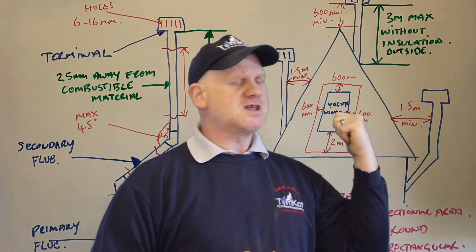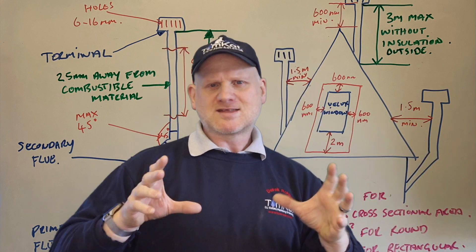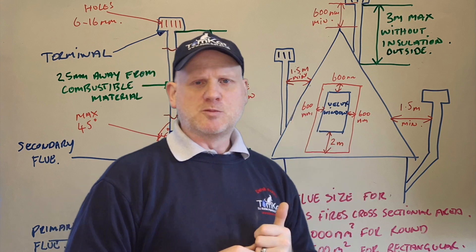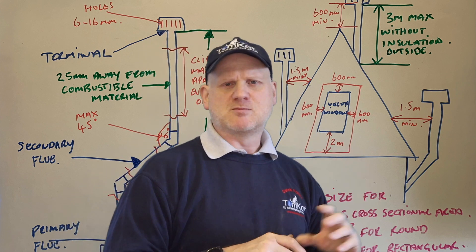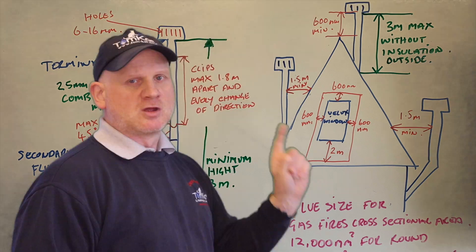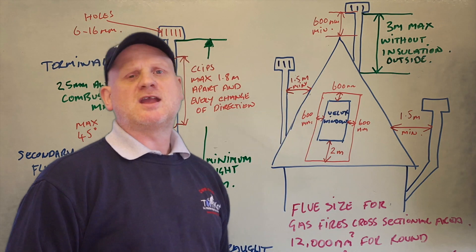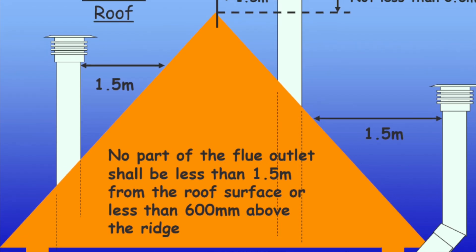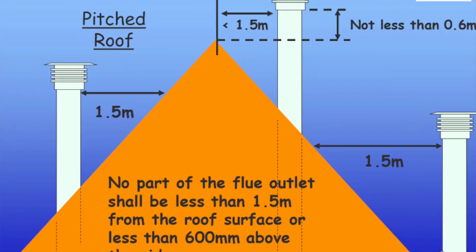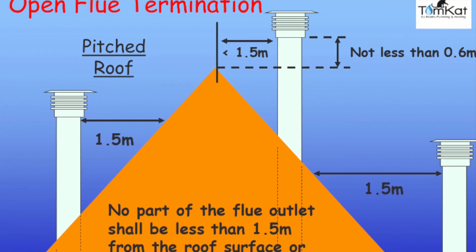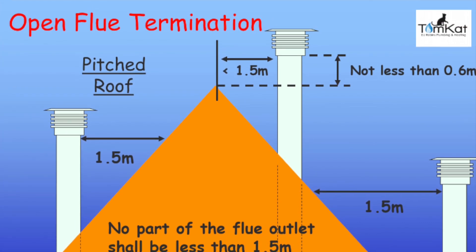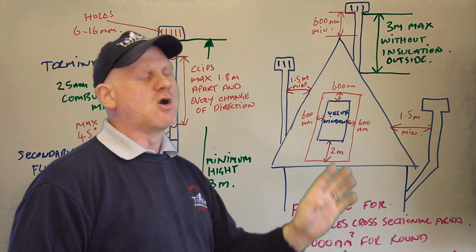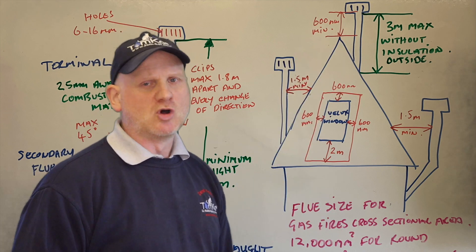When exiting the building, the positioning of the open flue pipe matters. From the side of the flue to the roof on a horizontal plane, you need more than 1.5 meters away. At the top, the terminal needs to go above the ridge by more than 600mm.